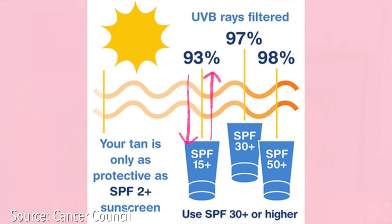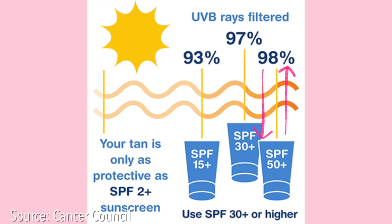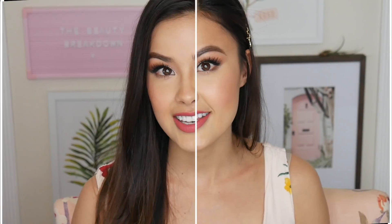There's a generally agreed upon idea of how much protection you get from an SPF. SPF 15 usually offers 93% protection from UVB rays, SPF 30 offers 97% protection from UVB rays, and SPF 50 will protect you 98% from UVB rays.